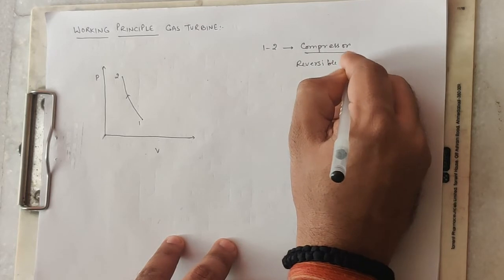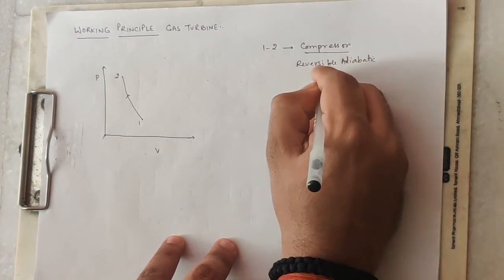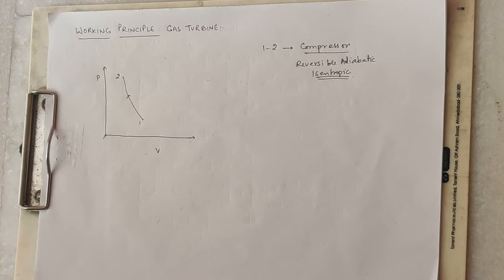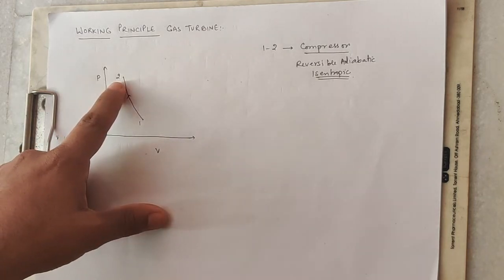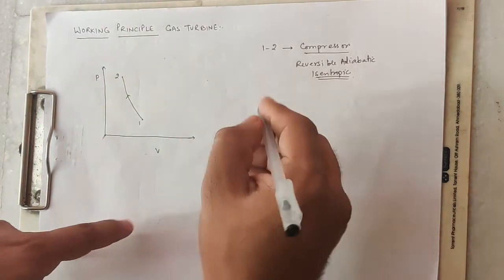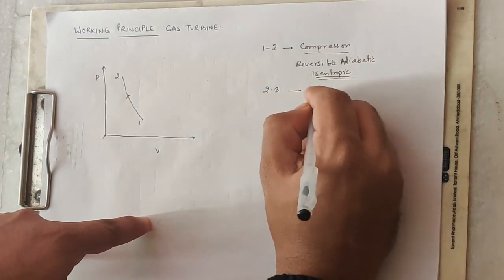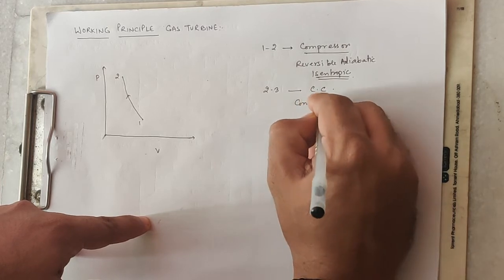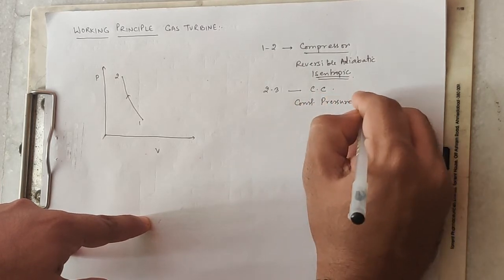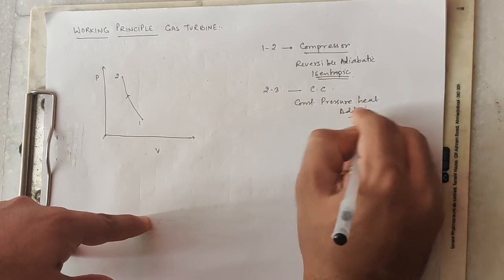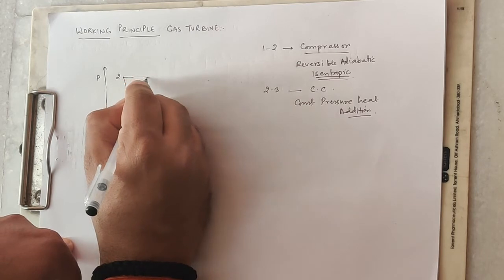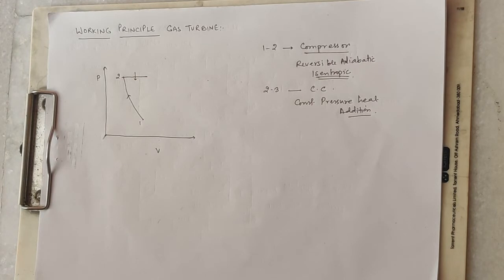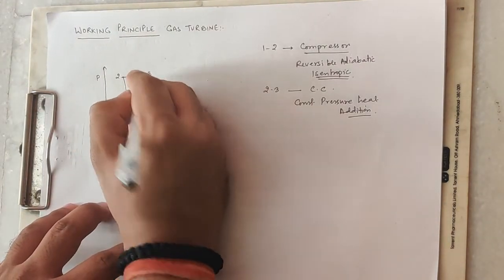Process 1 to 2 is an isentropic compression process. Process 2 to 3 takes place in the combustion chamber and is a constant pressure heat addition process. So 2 to 3 is constant pressure heat addition.